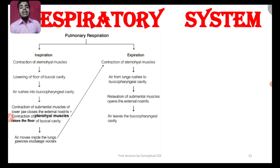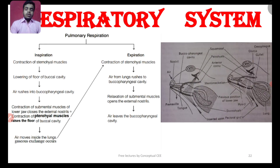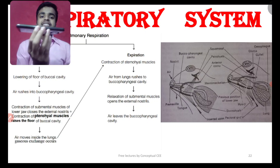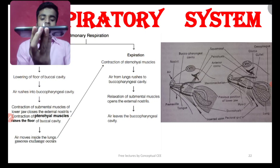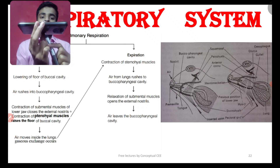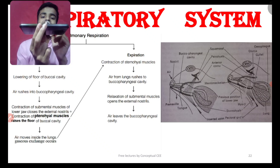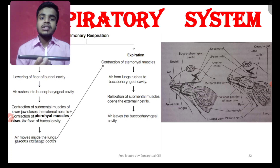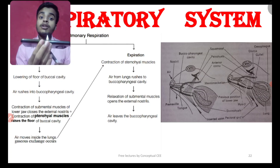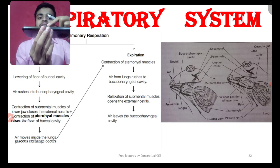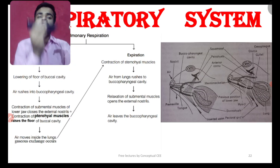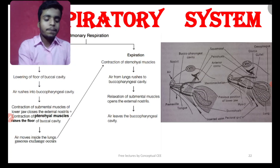Next is the physiology of how pulmonary respiration occurs. The sternohyal muscle group is important here. When the sternohyal muscles contract, the floor of the buccal cavity lowers, causing the buccal cavity volume to increase. This is the basic concept of the mechanism.